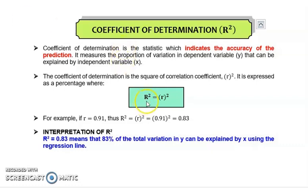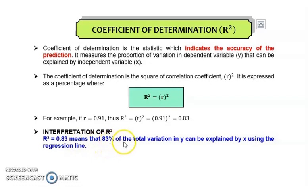The coefficient of determination R squared is calculated by squaring the Pearson correlation value. For example, if our correlation coefficient is 0.91, then the coefficient of determination is 0.91 squared, which equals 0.83. This means that 83 percent of the total variation in Y, the dependent variable, can be explained by X, the independent variable, using the regression line.